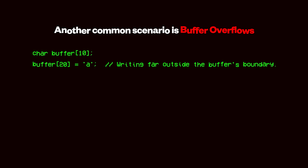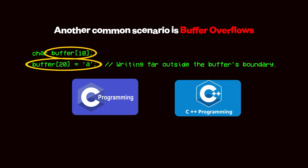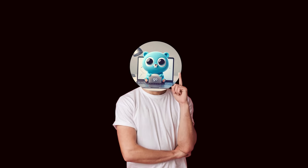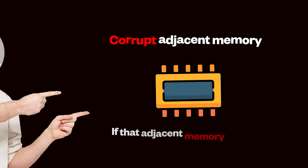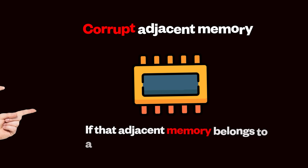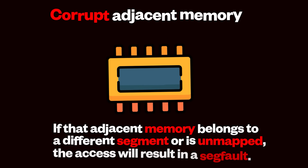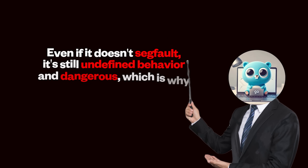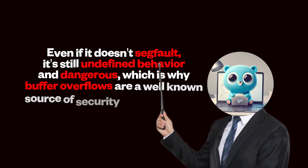Another common scenario is buffer overflows. Arrays in C or C++ do not have automatic bounds checking, so accessing an index beyond the size of the array can corrupt adjacent memory. If that adjacent memory belongs to a different segment or is unmapped, the access will result in a segfault. Even if it doesn't segfault, it's still undefined behavior and dangerous, which is why buffer overflows are a well-known source of security vulnerabilities.